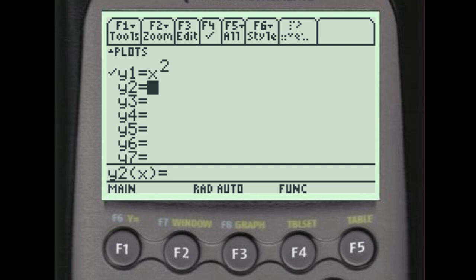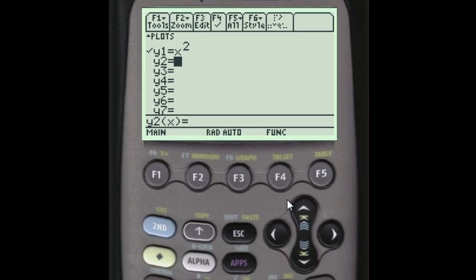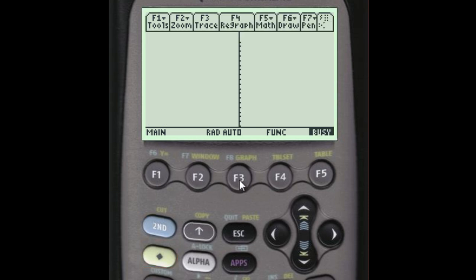Now if we want to view this graph, we can go to the apps, scroll up and find the graph like we did before. But if you notice above the F3 key, there's this yellow writing that says graph, and anything in this yellowish green color you can access by pressing the diamond key and then pressing that button. So diamond F3 brings us to the graph program and it's going to graph this function Y equals X squared.